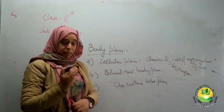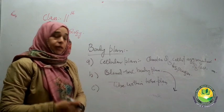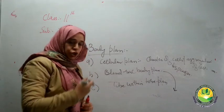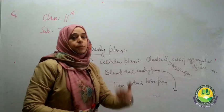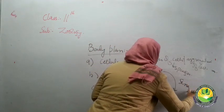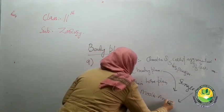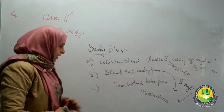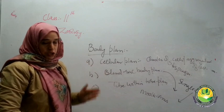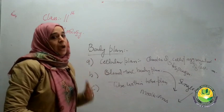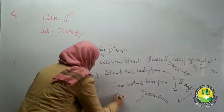When we talk about the blind sac body plan, the organism contains a single body cavity responsible for performing both functions — ingestion and egestion. A single opening acts as both mouth and anus, responsible for the intake of food as well as the expulsion of undigested matter. This can be seen in flatworms.